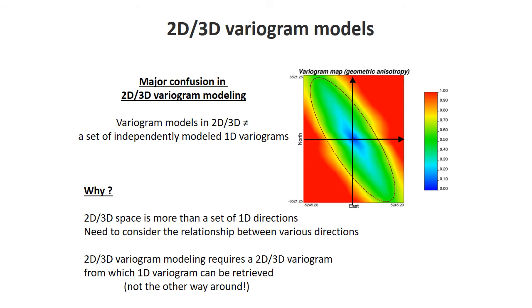As you start modeling, what you should not try to do is fit individual 1D variograms. You have to create a mental image of this geometric anisotropy. This geometric anisotropy can be related to actual phenomena that you know exist — for example, knowing that in the vertical you have more variation than in the horizontal, and that has to somehow go into the variogram model.